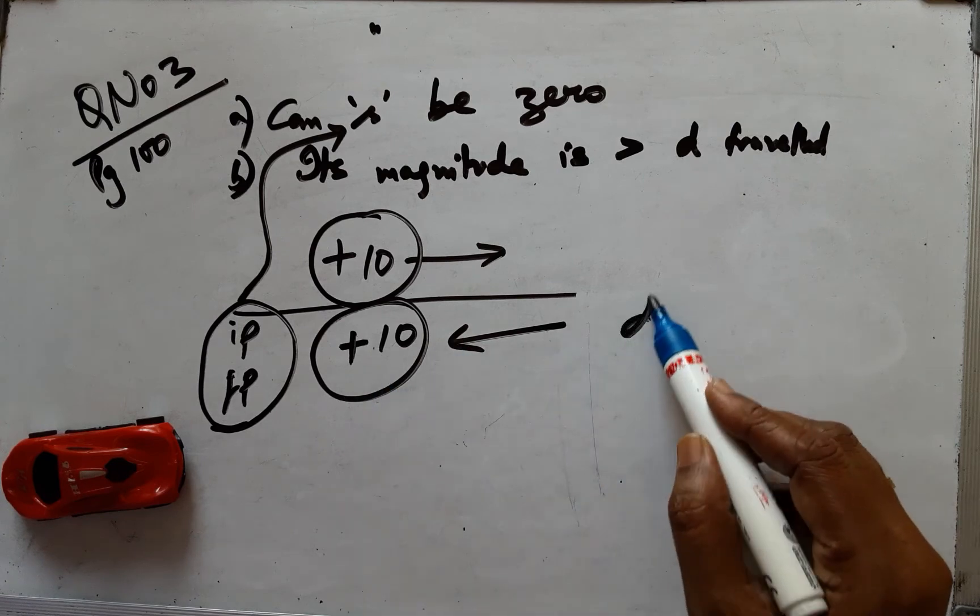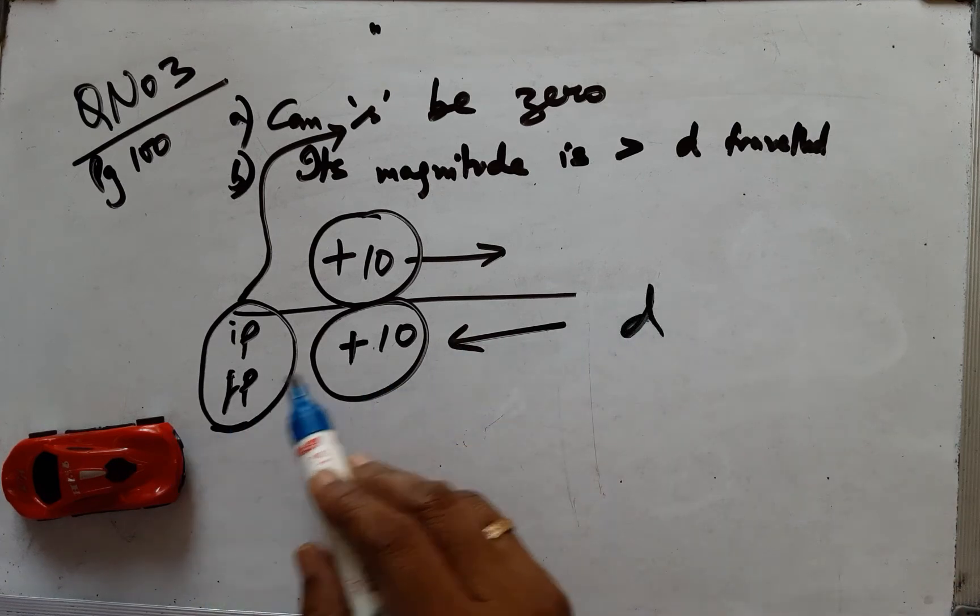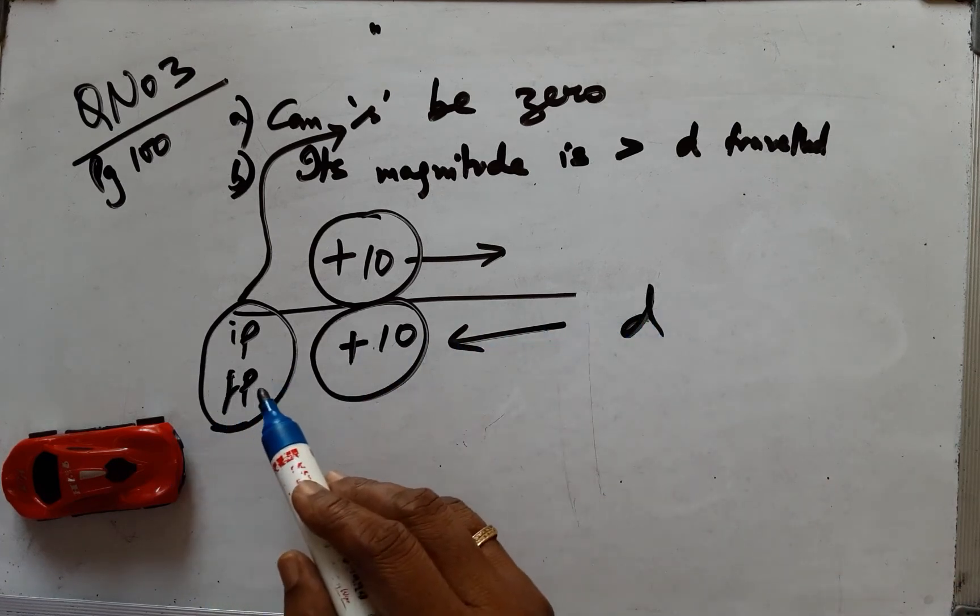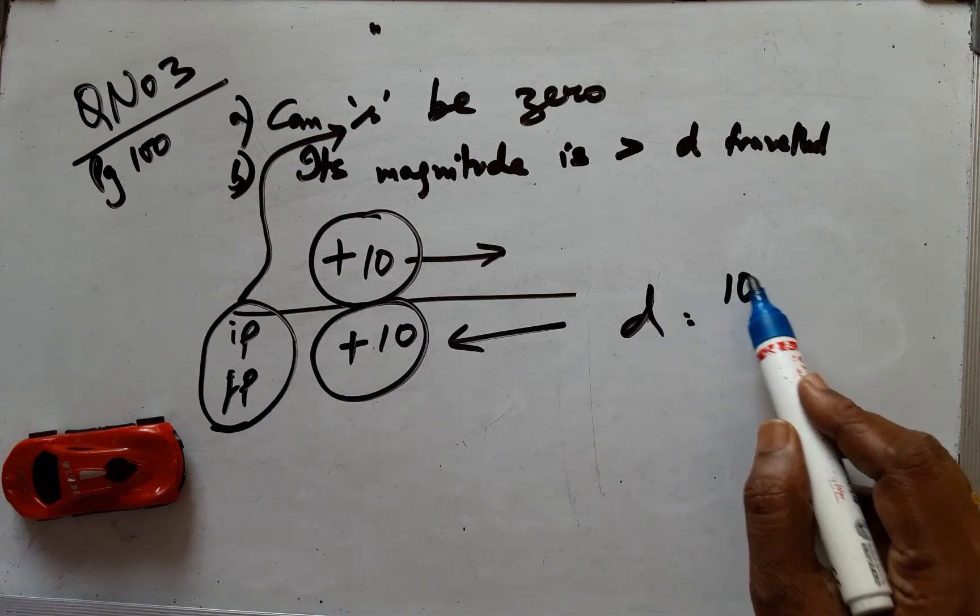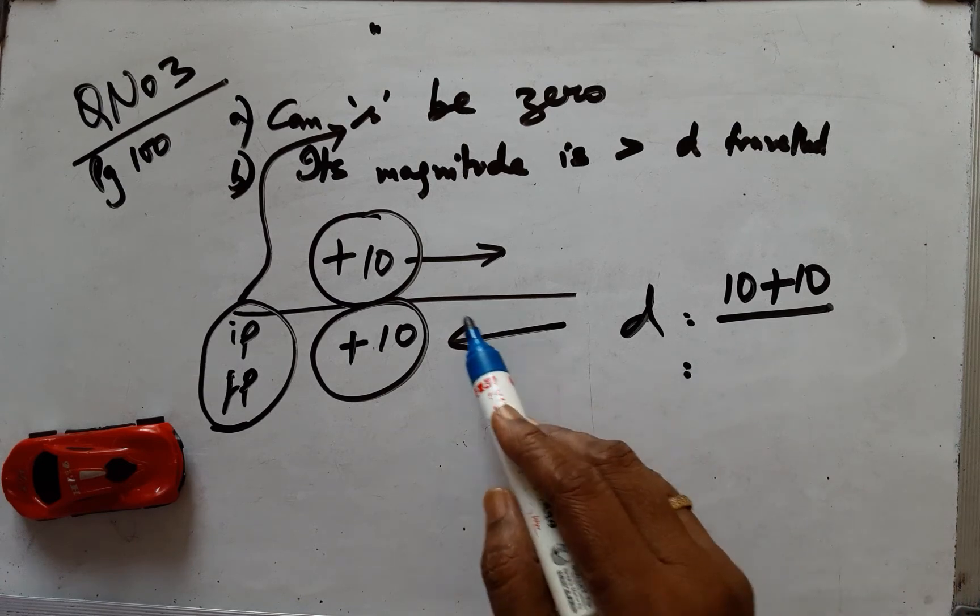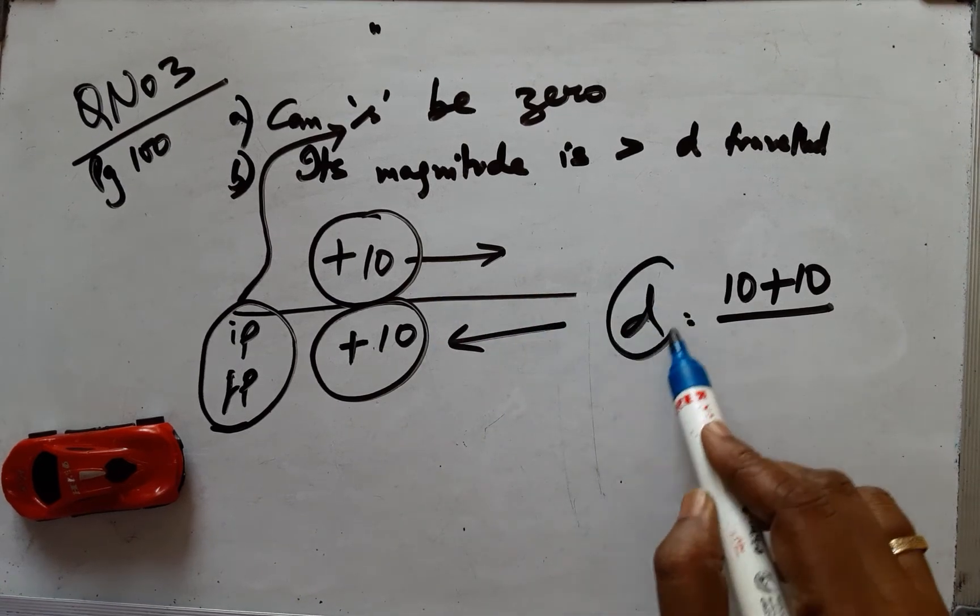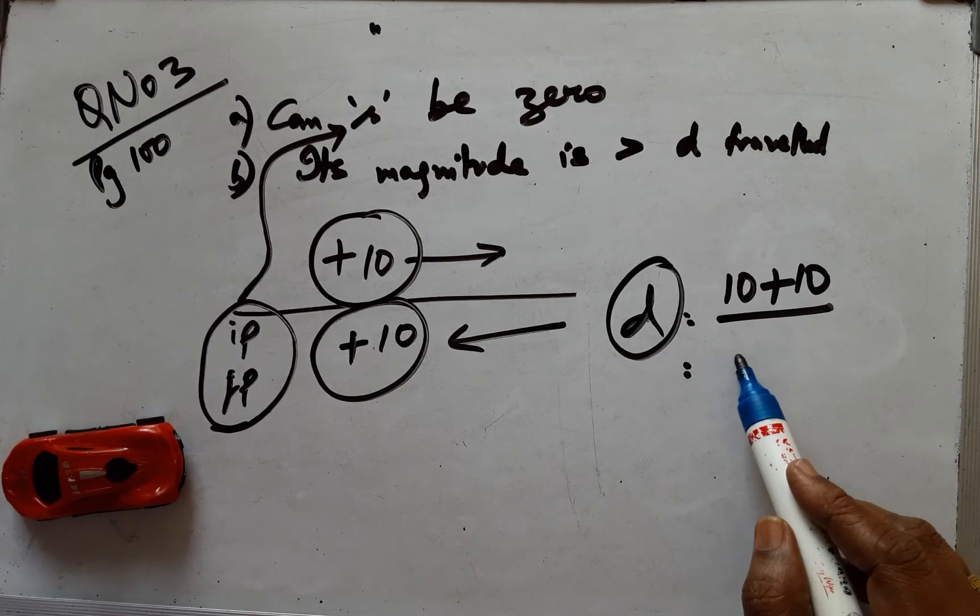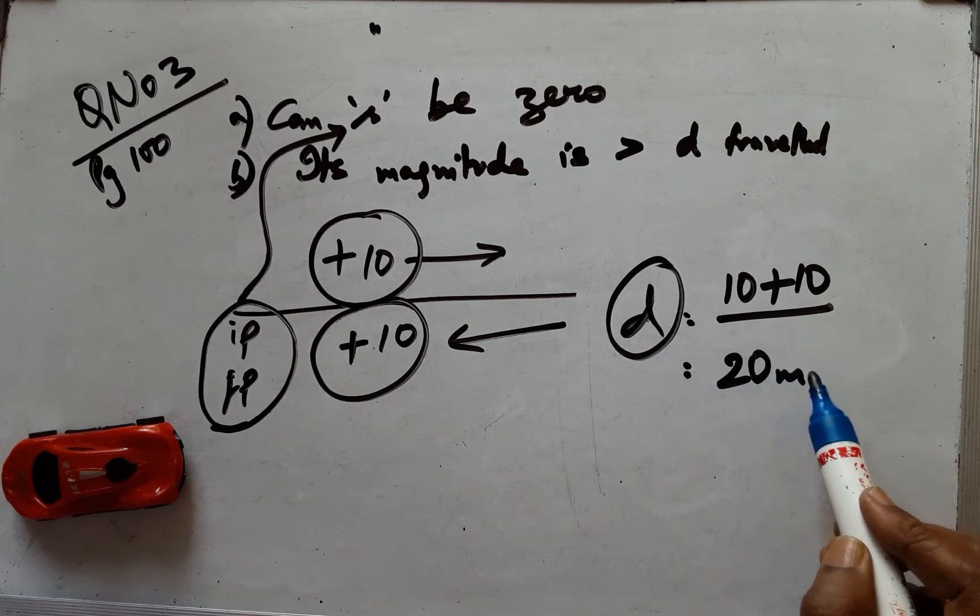And we compute the distance for the same, the car going forward 10 and coming backward 10. It would be simple addition of the magnitudes without any sign convention because direction is not involved in the computation of distance, and therefore it comes to 20 meters.